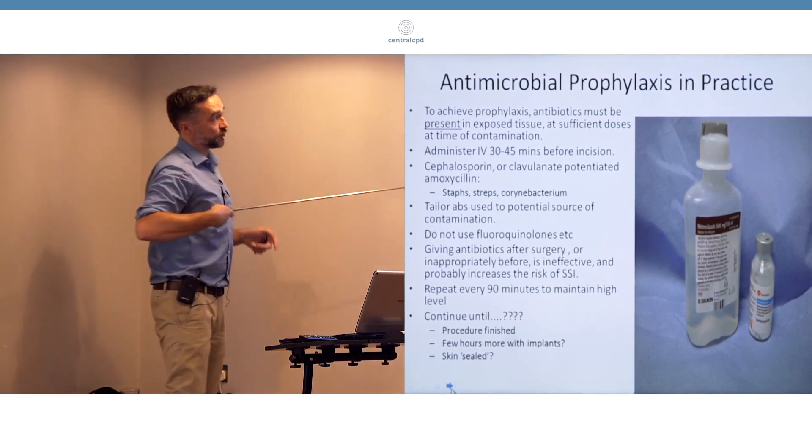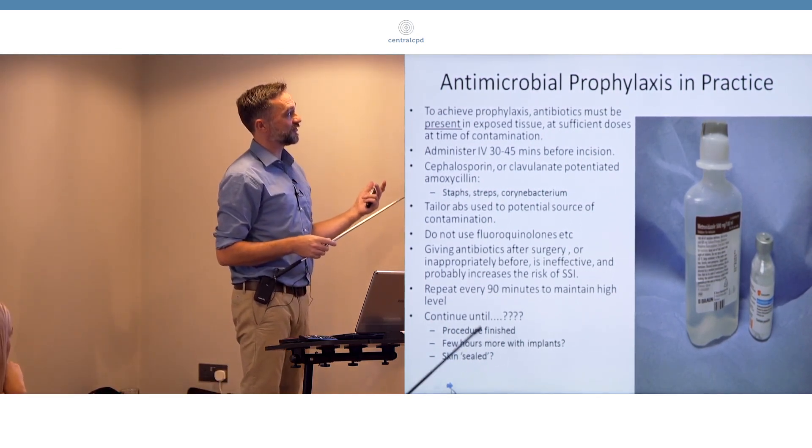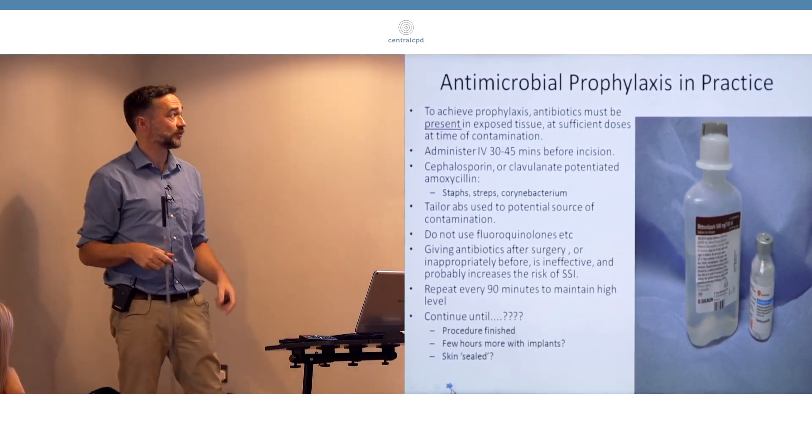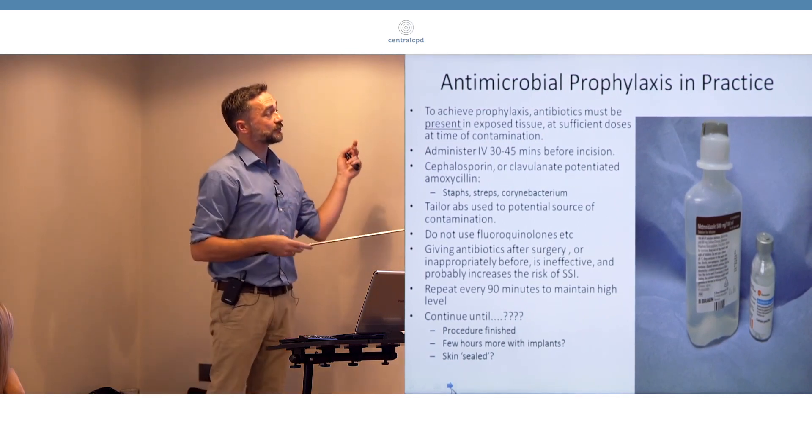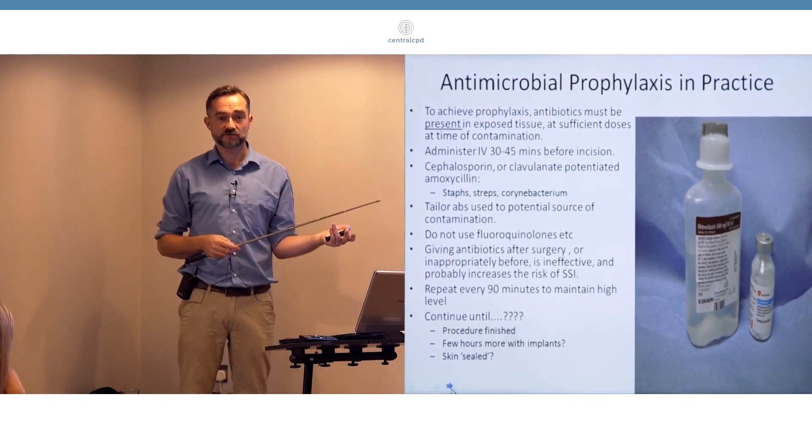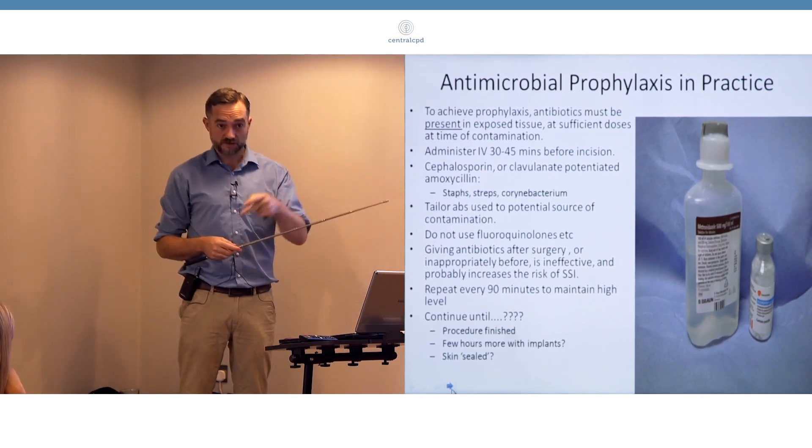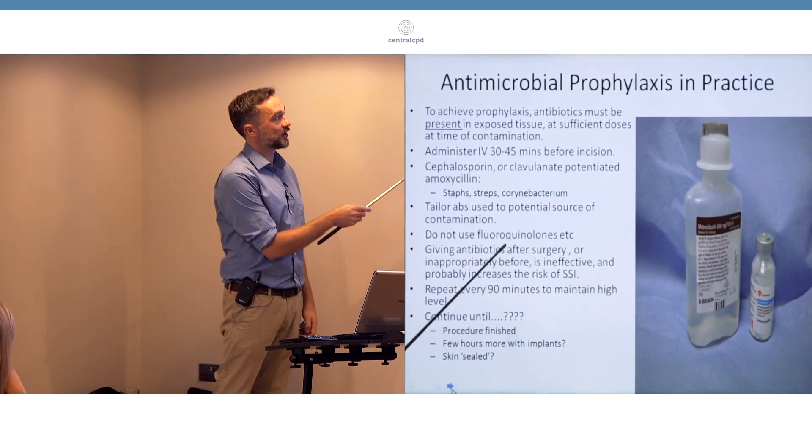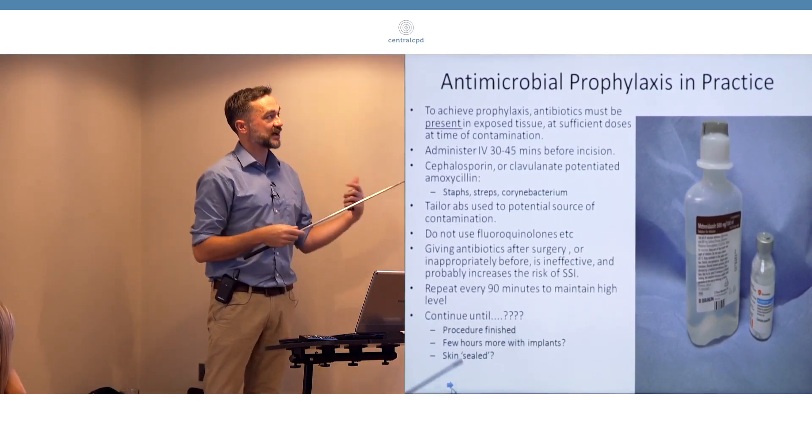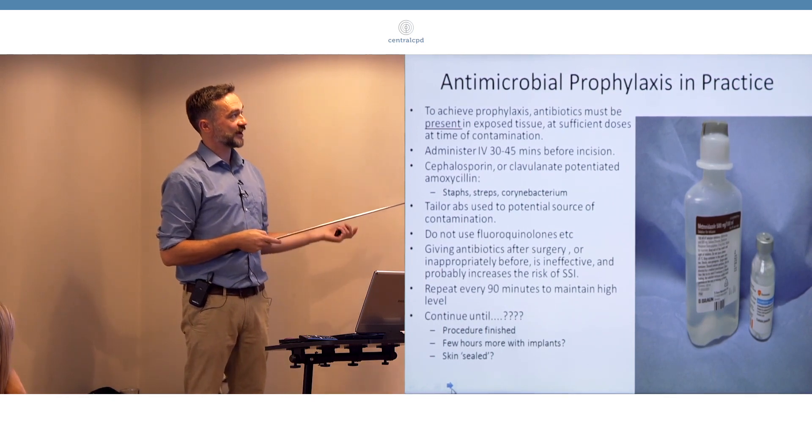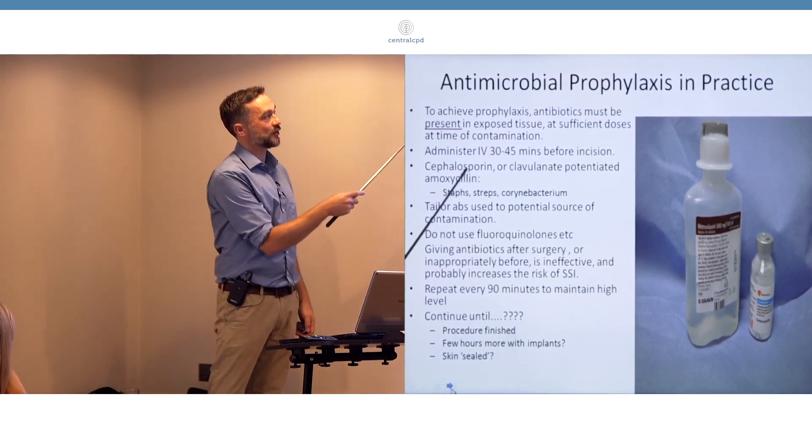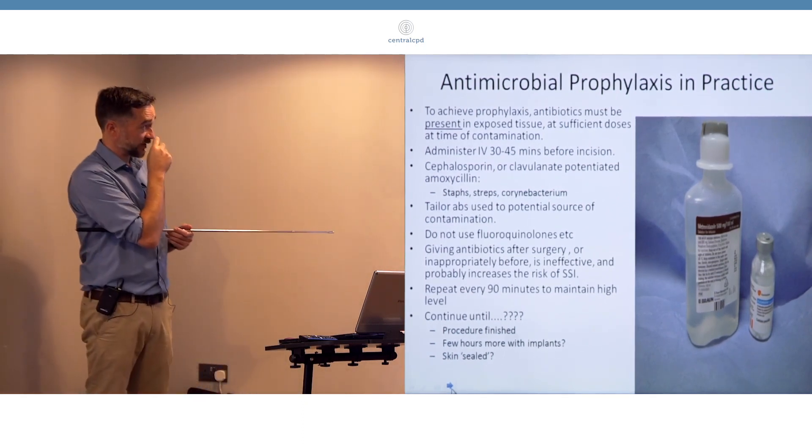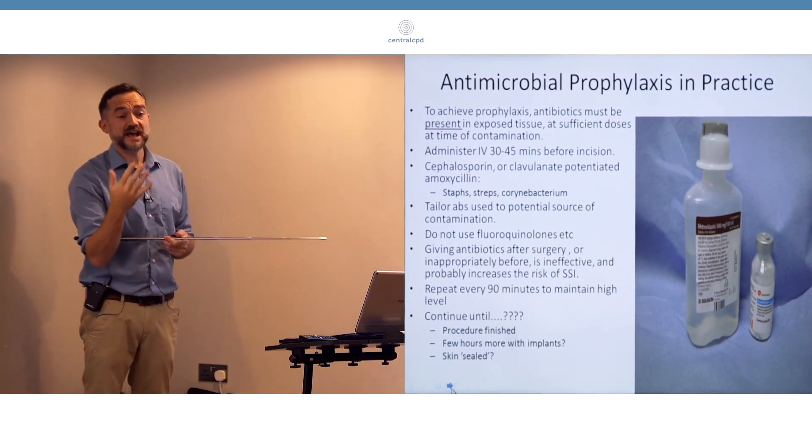We're usually going to use an antibiotic that's going to be effective against what we expect to encounter, so we're trying to keep things as narrow as we can. Usually the bacteria that are going to cause us a problem are the bacteria that are present on an animal's skin, pushed into a wound, so things like staph, streps, Corynebacterium. Effective against those would be something like an intravenous cephalosporin or clavulanate-potentiated amoxicillin, so Augmentin, or things like Xinosef available as intravenous preparations.